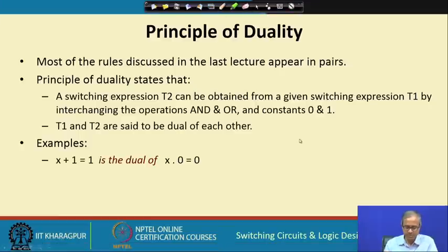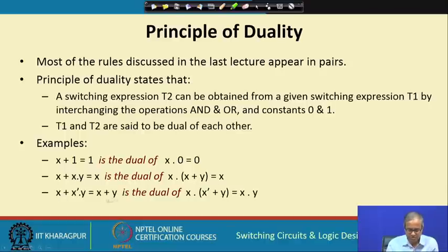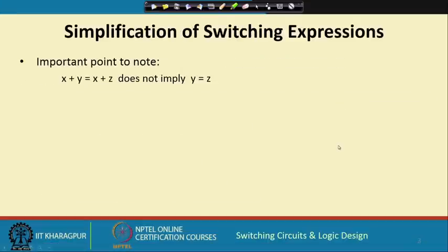Some examples: x · 0 = 0 you already know. Following this rule, dot becomes plus and 0 becomes 1, so x + 1 = 1 is also true — this is the dual. Similarly, other rules come in pairs where one is the dual of the other. Because of duality, most of the rules presented in the last lecture come in pairs. If we prove one, the principle of duality says the other will also be proved — you need not prove both.